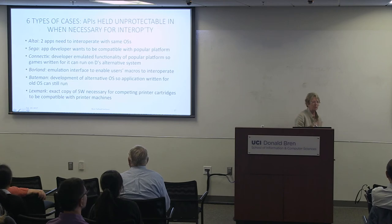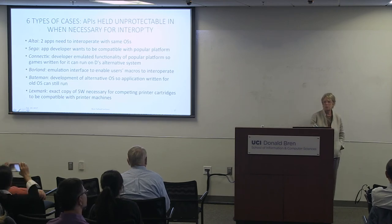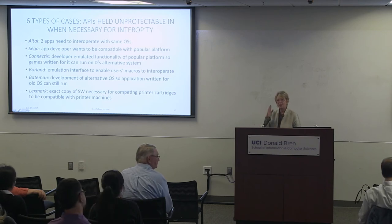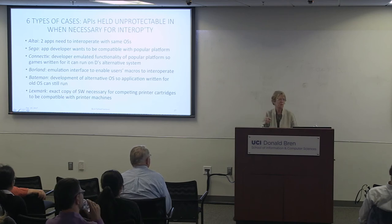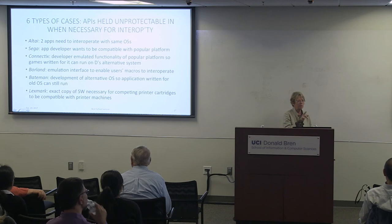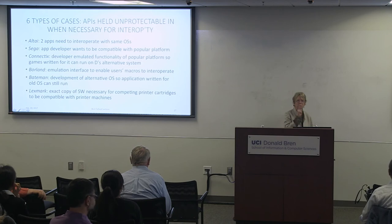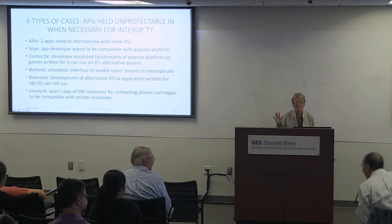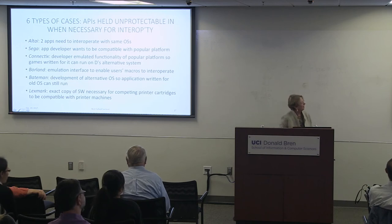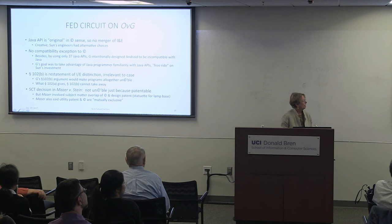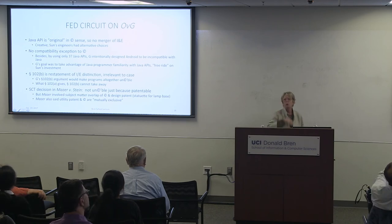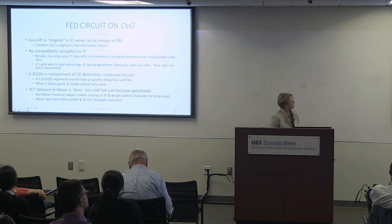The Federal Circuit's decision calls into question all of those prior cases — under its conception of copyright scope in software, they would all have been decided differently. Some are actually Ninth Circuit cases, which the Federal Circuit is supposed to be bound by, and they just flatly misread them. If I had a student who interpreted those Ninth Circuit decisions the way Judge O'Malley did in the Federal Circuit's Oracle v. Google decision, I would flunk them. On every single legal point, the Federal Circuit was just flat-out wrong.